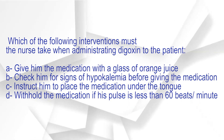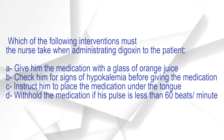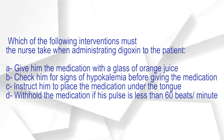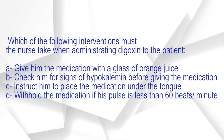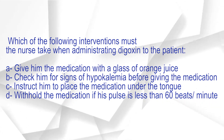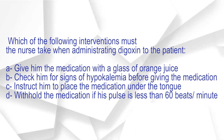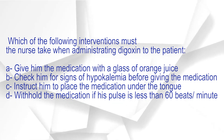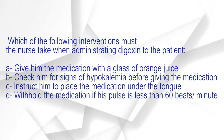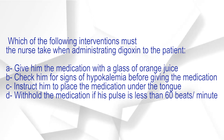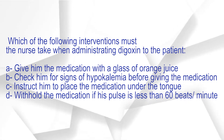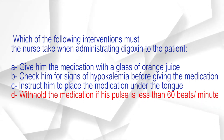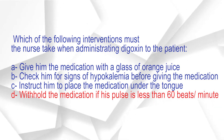Which of the following interventions must the nurse take when administering digoxin to the patient? A. Give the medication with a glass of orange juice. B. Check for signs of hyperkalemia before giving the medication. C. Instruct the patient to place the medication under the tongue. D. Withhold the medication if his pulse is less than 60 beats per minute. The correct answer is option D: Withhold the medication if his pulse is less than 60 beats per minute.